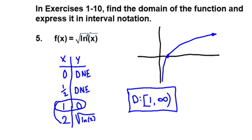In interval notation, the domain is from 1 inclusive to infinity: [1, ∞). This is a composition of functions — the logarithmic function inside a square root function — which is exactly what chapter 1.4 is about.